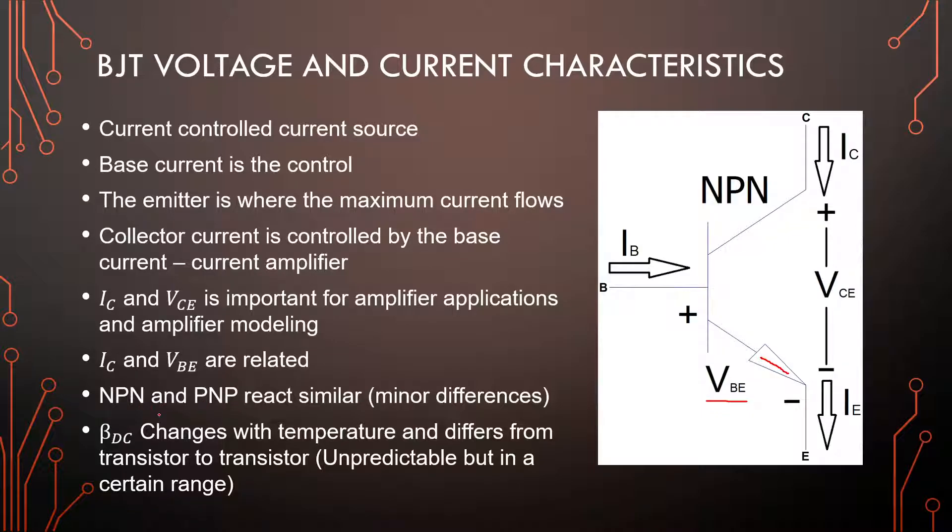But the VBE is also important to biasing our transistor and having it switched on in the right region. Then we know that our NPN and PNP transistors react similar with some minor differences. And one of the things that we need to know is that the beta value or the DC current gain of a transistor changes with temperature and it also differs from transistor to transistor. I'm not meaning from different component numbers. They could have been fabricated on the same day, can be with the same model number, and one can have a beta value of 100 and the other one a beta of 150. So it's a bit unpredictable. And if you're doing biasing circuits, this is something you need to cater for.